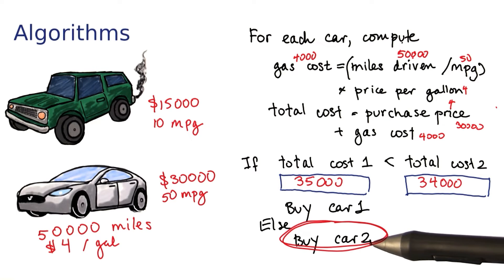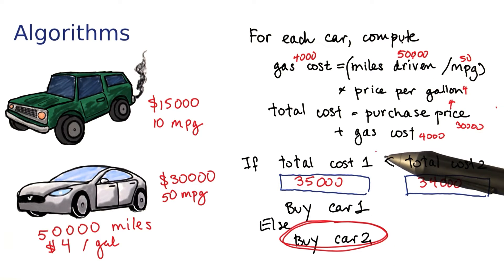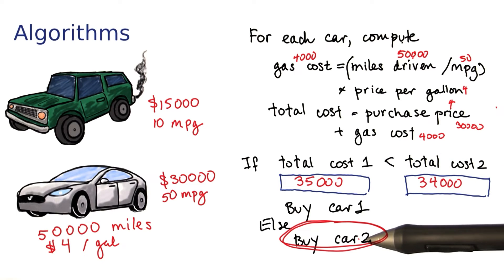So this is a great example of an algorithm. It is a recipe of steps, each of which is so simple that a computer or a human can execute them, and it reaches an answer.